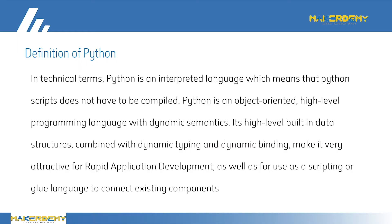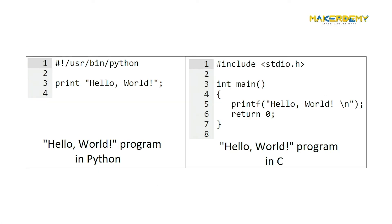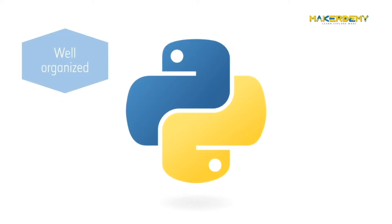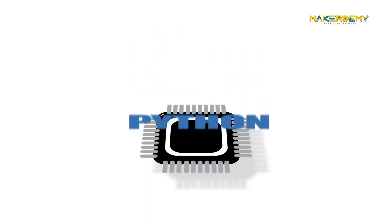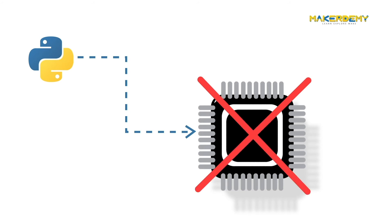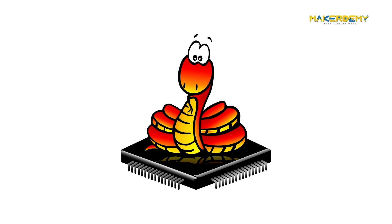In technical terms, Python is an interpreted language, which means that Python scripts do not have to be compiled. Python is an object-oriented high-level programming language with dynamic semantics. Its high-level built-in data structures combined with dynamic typing and dynamic binding make it very attractive for rapid application development, as well as for use as a scripting or glue language to connect existing components. It's easy to write what you mean in Python with concise and simple code. Additionally, Python flourishes because it has a well-organized, proactive, diverse, and welcoming global community. But Python needs a huge amount of memory to run, which is not available in microcontrollers, and it does not allow low-level access to the hardware. This is the reason why Damien chose to develop MicroPython.